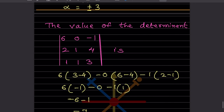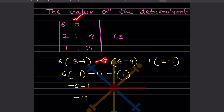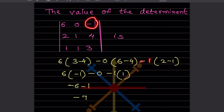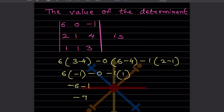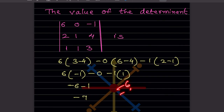Now the next problem: find the value of the determinant of a 3x3 matrix. Expanding along the first row: take 6 and consider 3 minus 4, which is minus 1. Then take 0 times its submatrix — that term is 0. Then take minus 1 and consider 2 minus 1, which is 1. So we get 6 times minus 1 plus 0 plus minus 1 times 1, giving minus 6 minus 1, which equals minus 7.